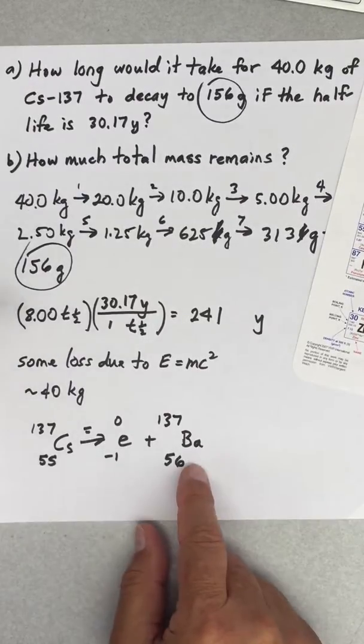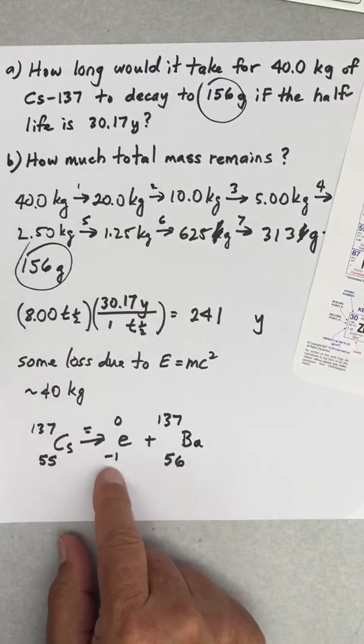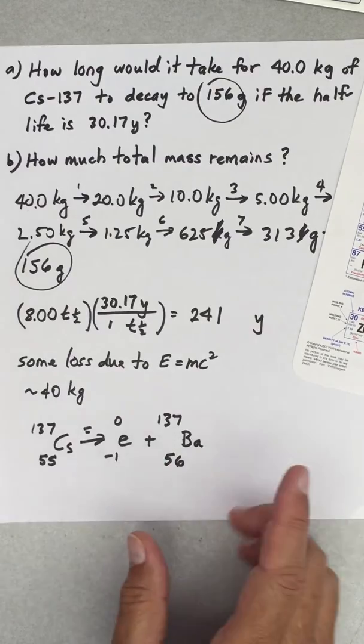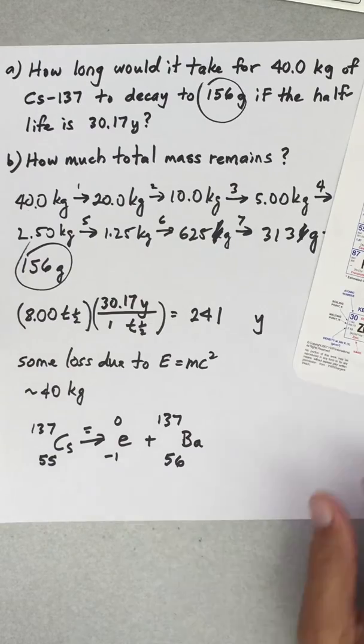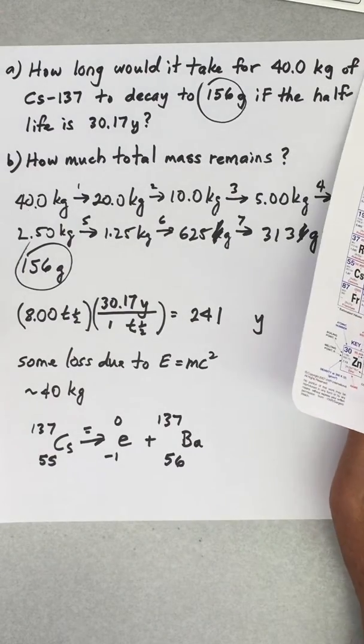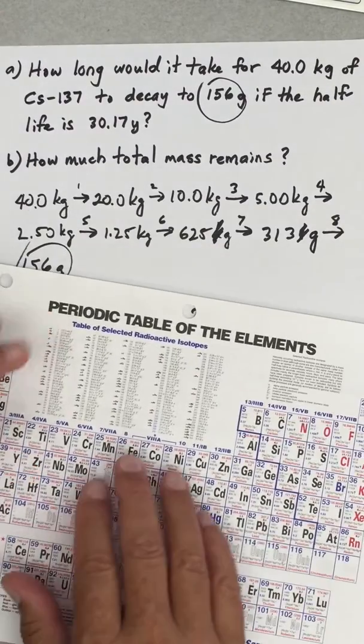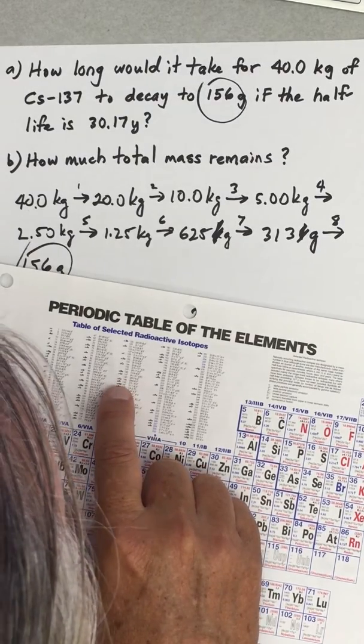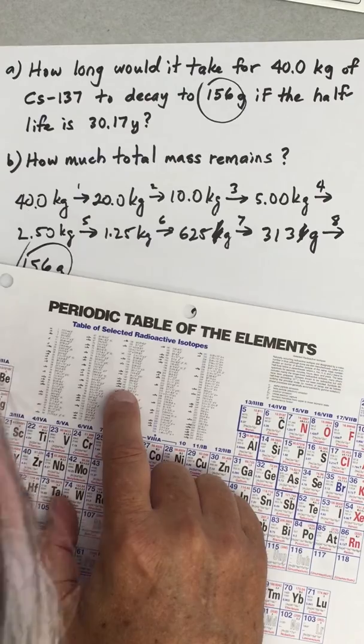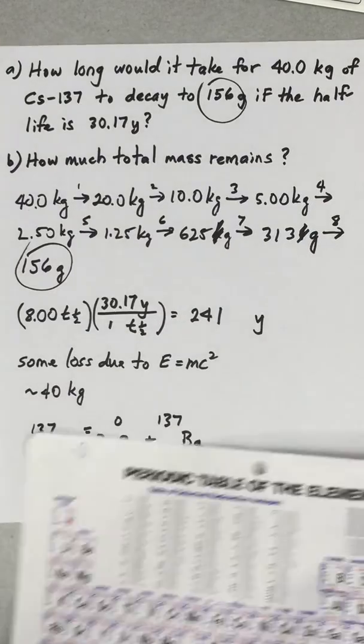Now I don't know if barium-137 is a stable isotope or whether it's going to decay quickly or not. If I try to find barium-137 over here, it doesn't have it here, so I don't really know. I'd have to go look it up on the internet or something.